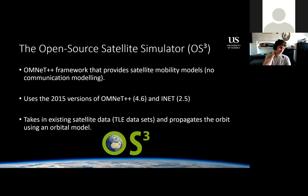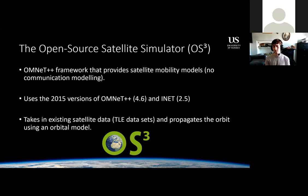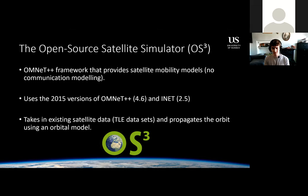The first step was figuring out how to get orbital mechanics working in the framework. We came across the open-source OS3 satellite simulator model, which was made for 2015 versions of OMNeT++ and INET. It works by using curl to download actual satellite TLE data sets, and using this existing data — which it reads offline — it propagates the orbits in the orbital model. What we needed to do was port this so it could be used in the latest INET versions.